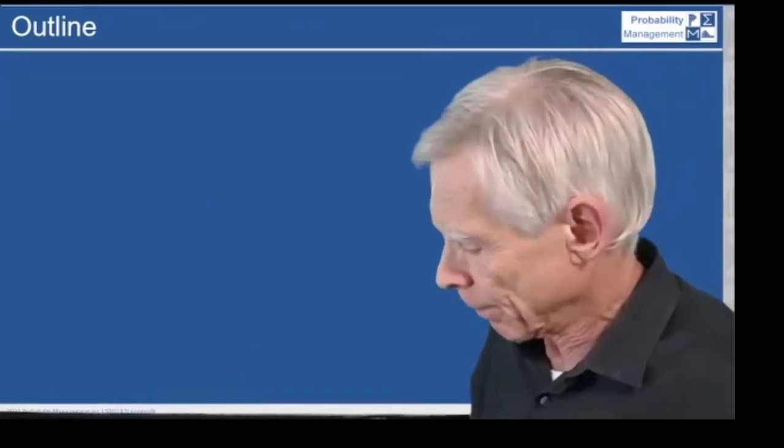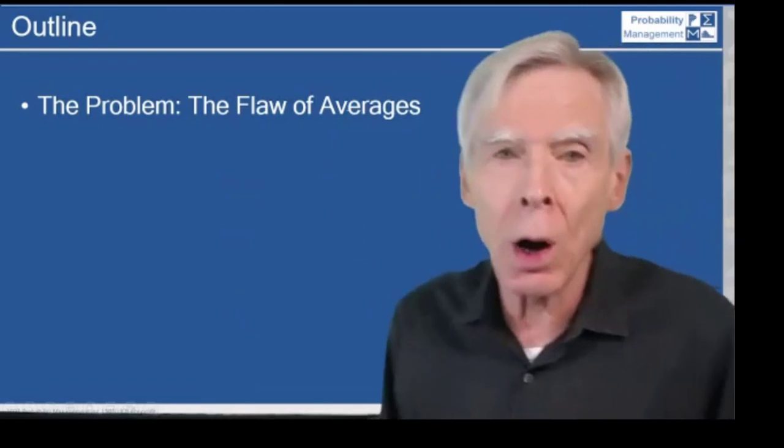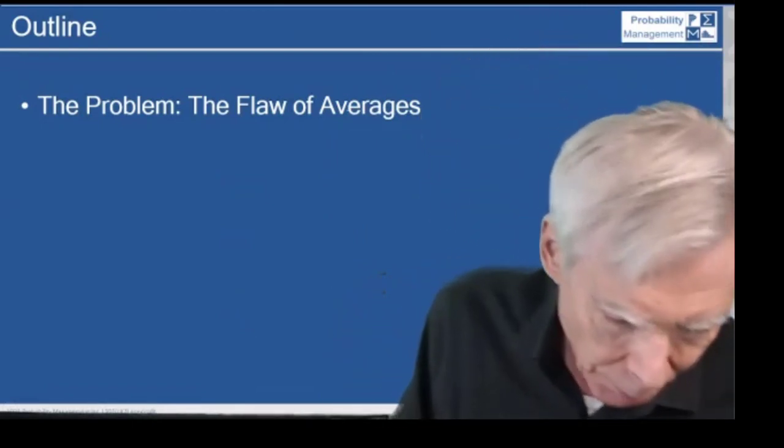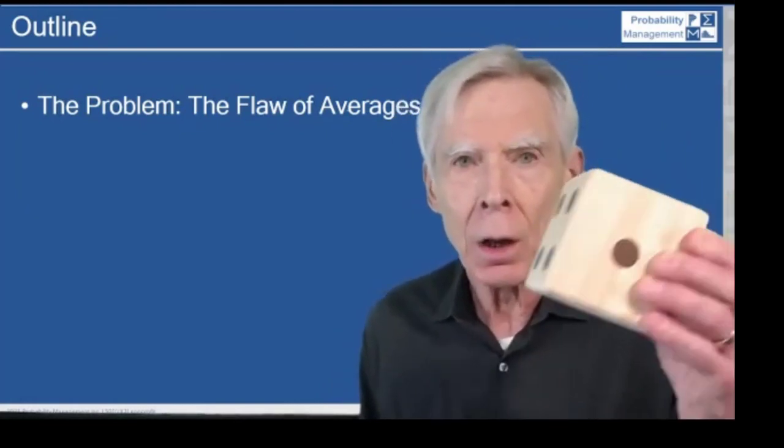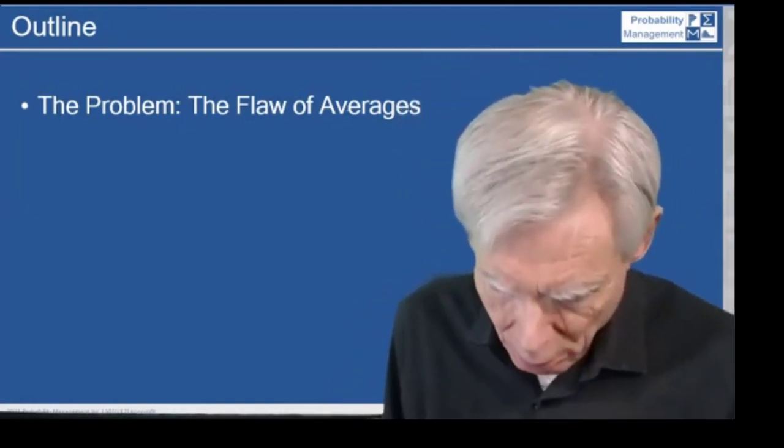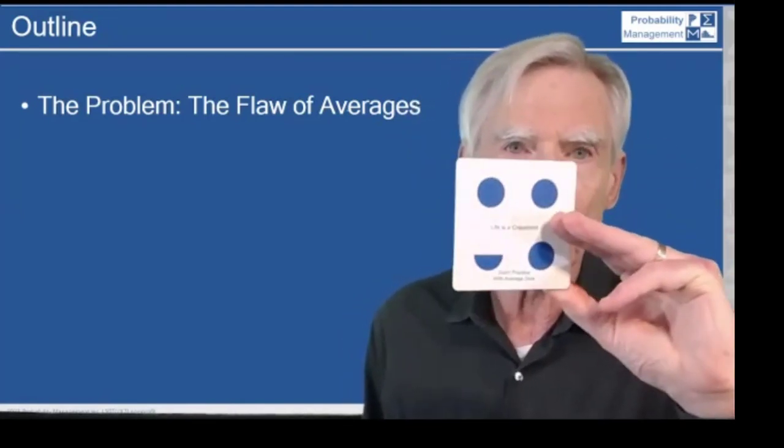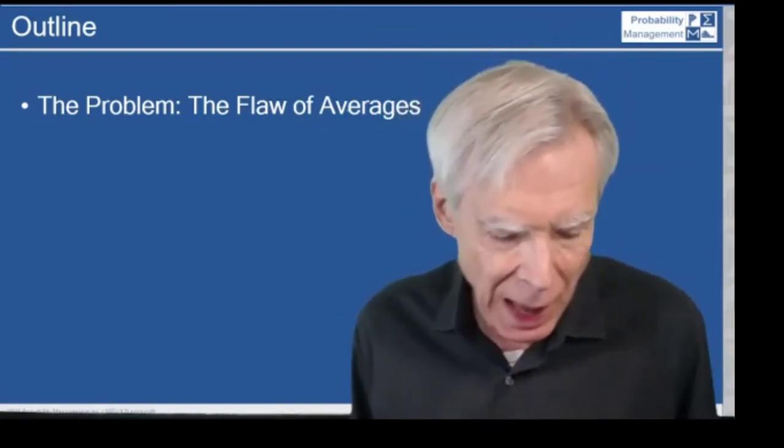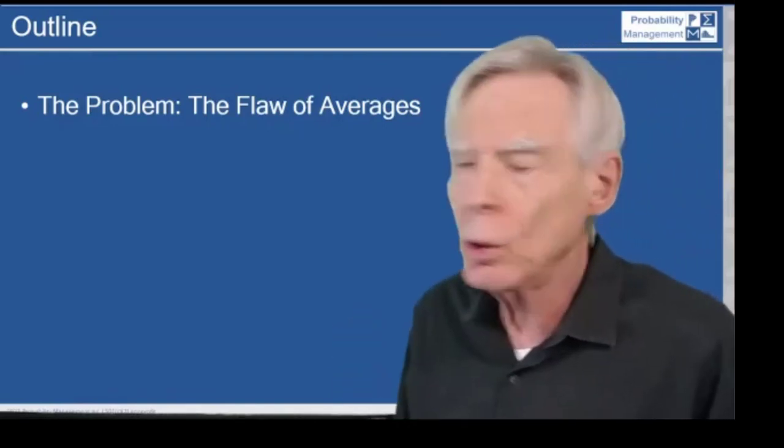So here's an outline of what we'll be discussing today. The problem is the flaw of averages, which if you're not aware of this, it's the equivalent of representing the uncertainty of rolling a die with a flat die with three and a half dots on each side, because three and a half is the average number that comes up on a die.